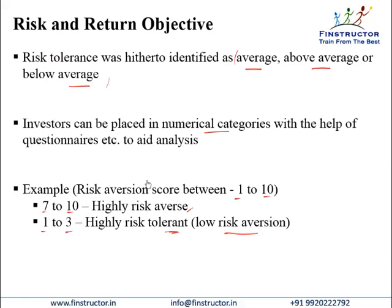There is no quantitative model prescribed by the curriculum for determining the risk aversion score. By asking various questions and assigning weights, you can formulate a questionnaire — financial or non-financial questions like 'Do you like going to the casino?' or 'Do you think the portfolio should be safe?' You can assign mathematical weights such that positive answers give a score near 1 and negative answers give a score near 10. There is no mathematical model prescribed; if it comes on the exam, the score will normally be given to you.